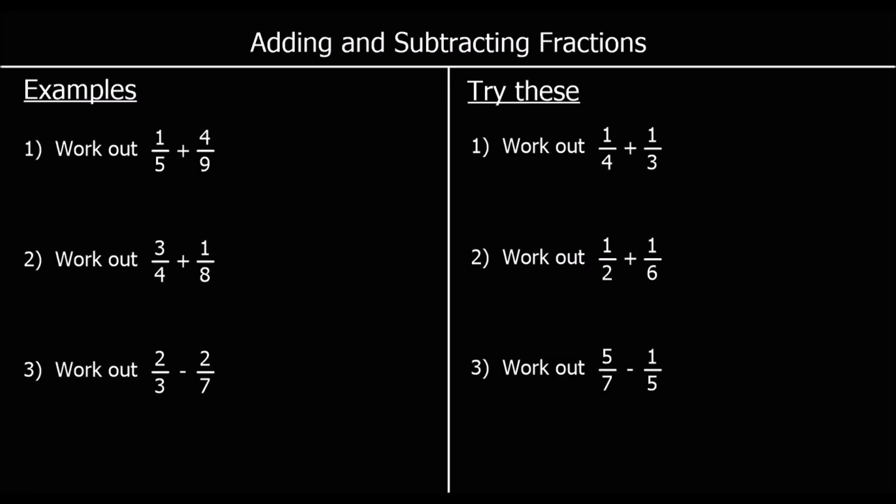Adding and subtracting fractions. We can only add or subtract fractions that have the same denominator — the same number on the bottom. So we can only add halves to halves, thirds to thirds, quarters to quarters, fifths to fifths, and so on. If we want to add two fractions with different denominators, we need to change them first using equivalent fractions so we've got the same denominator before we can add or take them away.